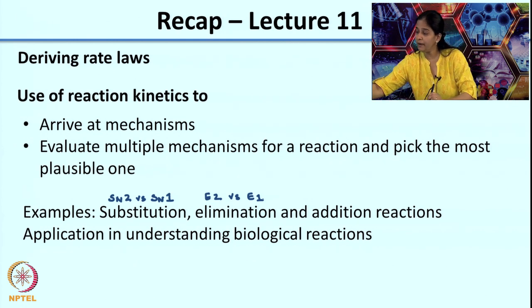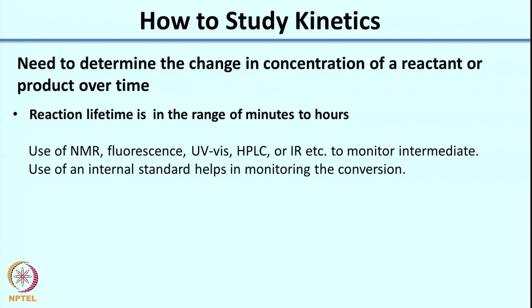Now the question is: if I am doing the experiment, what I would need to do for any kinetics analysis is measure the concentration of any one species — either the reactant or the product — over time. I say reactant or product because they are more stable compared to intermediates. There are methods to look at reactive intermediates, but they do not exist for a long time in solution; their lifetime is very small, making it much more challenging to study them. Later in the course, we will look at methods to study intermediates by what is called trapping the intermediate.